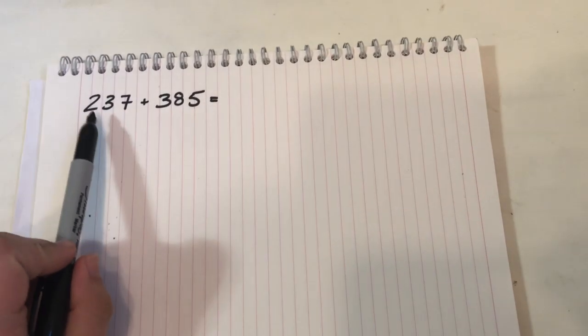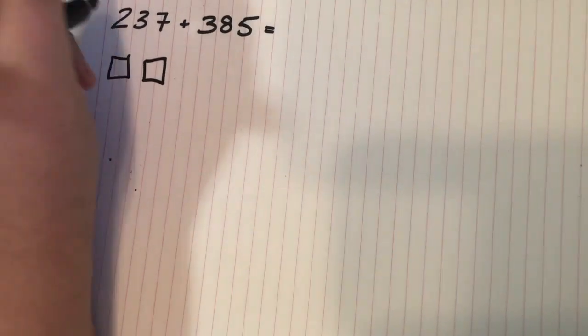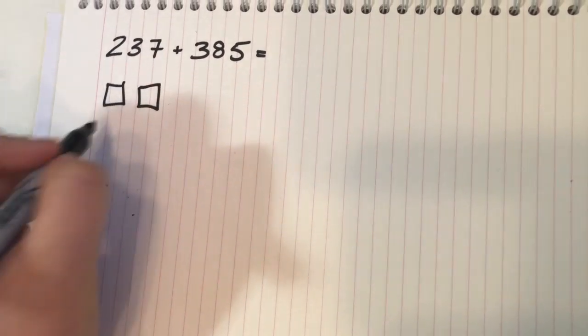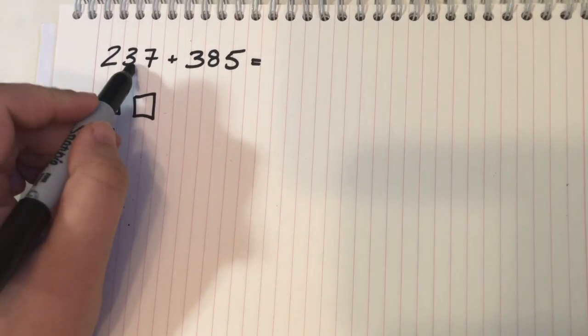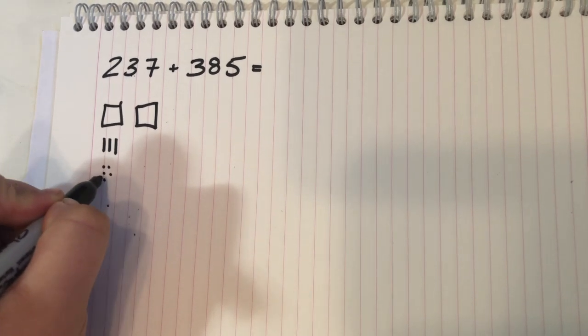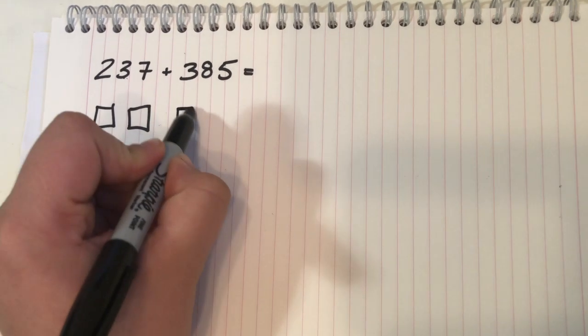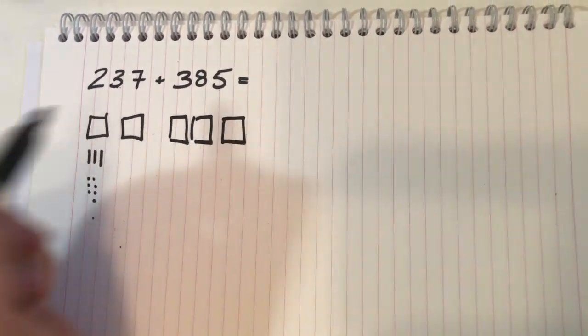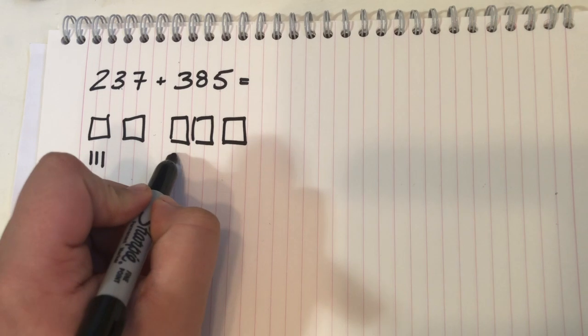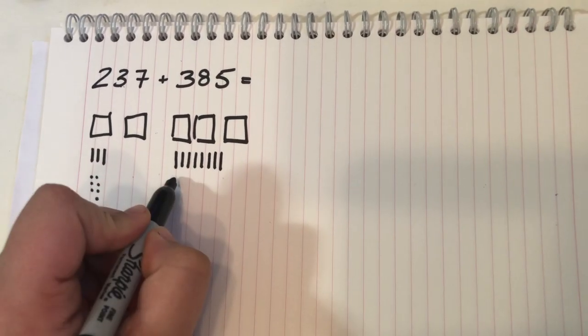So my question is 237 plus 385. To draw this pictorially, you will have 100 blocks, 200 blocks. Then for the 300s, you'll have 300 blocks. You're going to have 8 tens: 1, 2, 3, 4, 5, 6, 7, 8. And you'll have 5 ones.